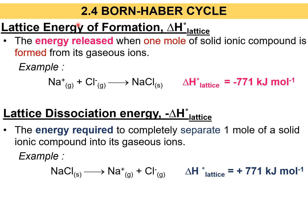The next energy term involved in the Born-Haber Cycle is lattice energy. There are two types of lattice energy: lattice energy of formation and lattice dissociation energy. If a question asks for the definition of lattice energy, you give the definition of lattice energy of formation, as that is the main definition.